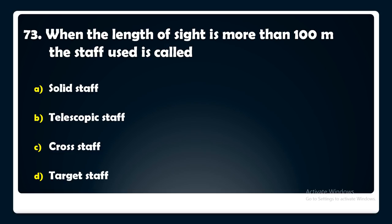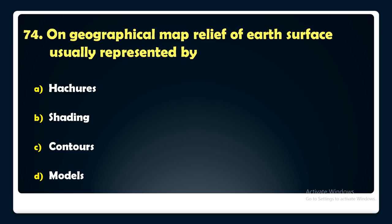On a geographical map, the relief of the earth's surface is usually represented by — hatches, shading, contours, or models? The answer is: relief of the earth's surface on a geographical map is usually represented by contours.